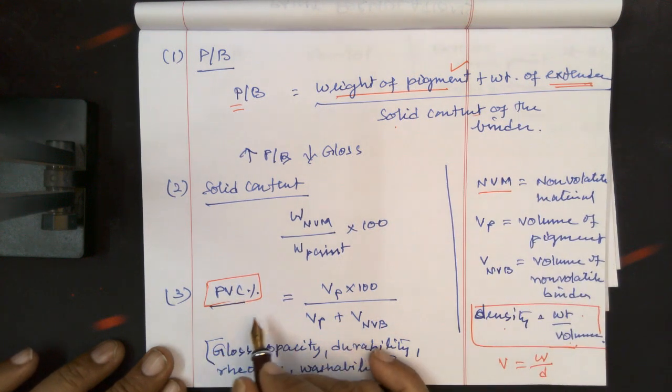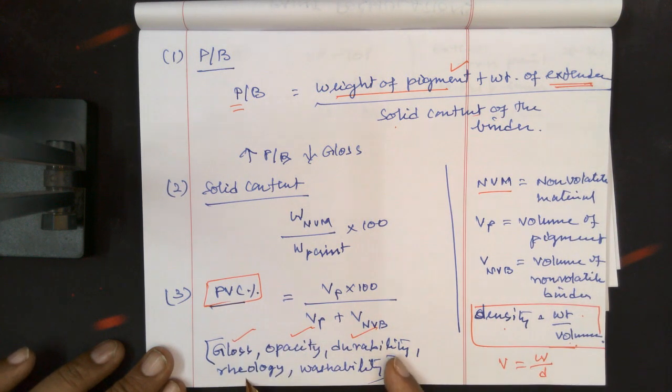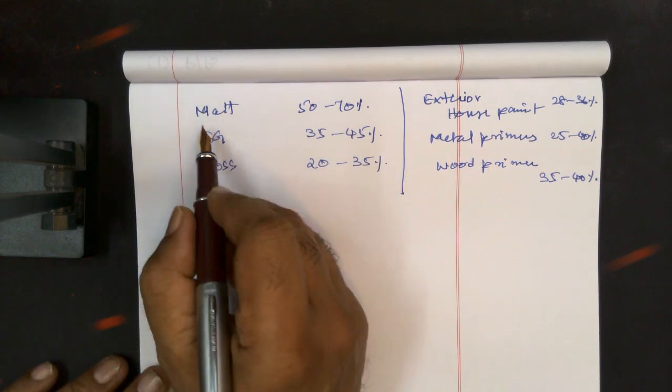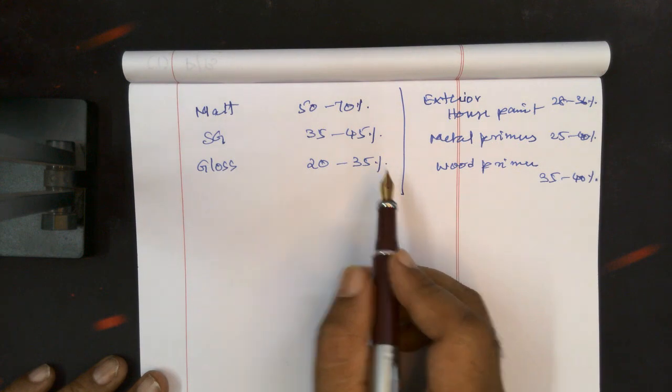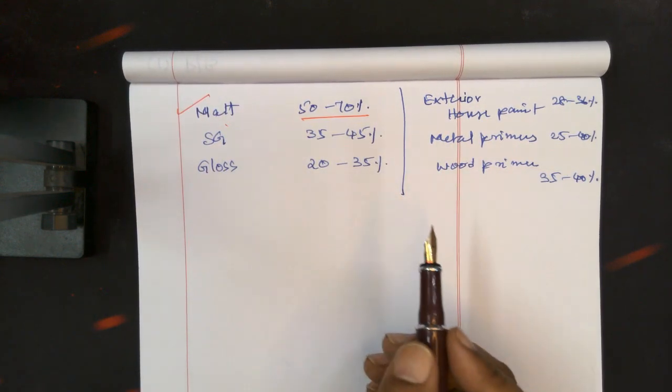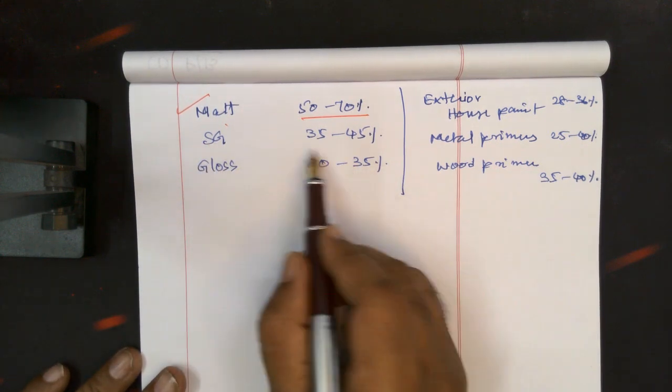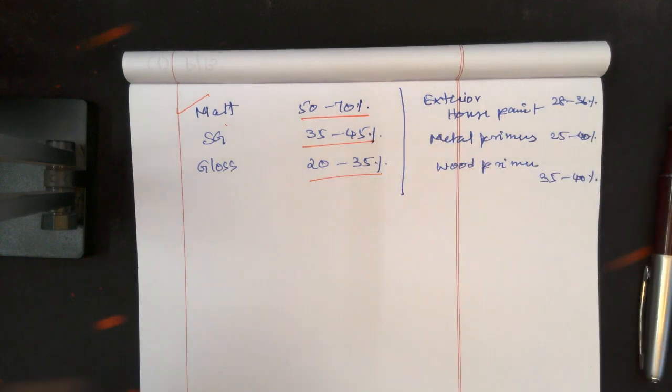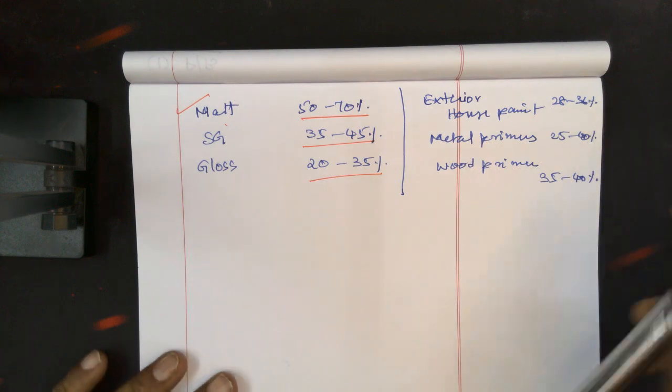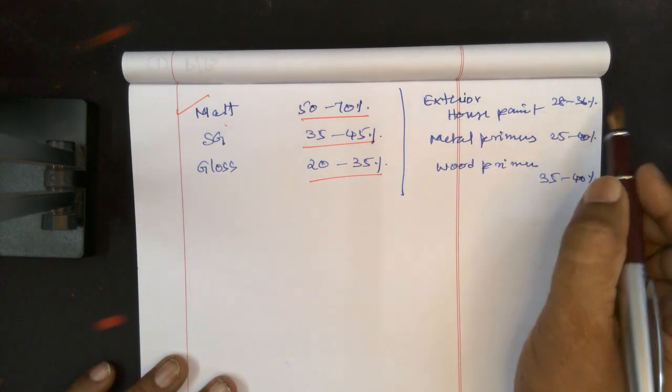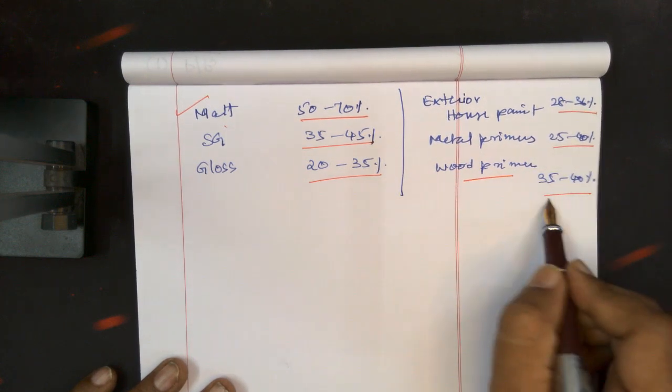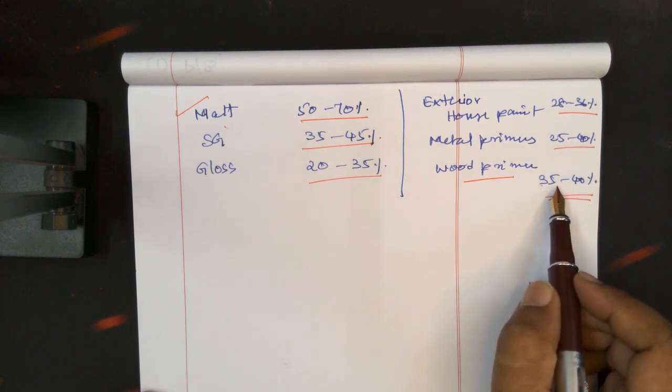The PVC affects the following parameters: gloss, opacity, durability, rheology (the settling characteristics), washability, water resistance, water permeability, etc. We know already that pigment volume concentration varies for different types of paint. For example, matte paint is around 50 to 70%, semi-glossy paint is 35 to 45%, high gloss is 20 to 35%. For exterior house paints it is 28 to 36%, metal primer 25 to 40%, and wood primer has more pigmentation at 35 to 40%.